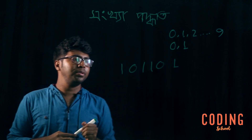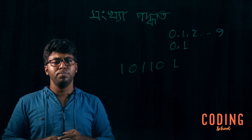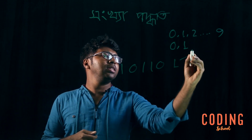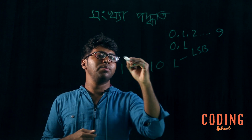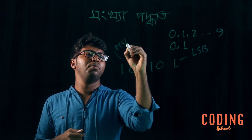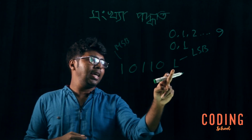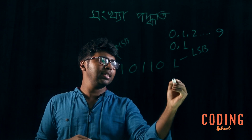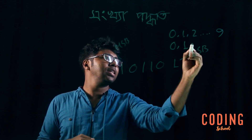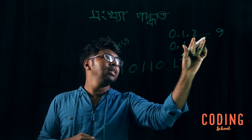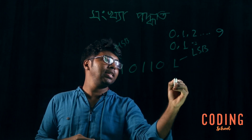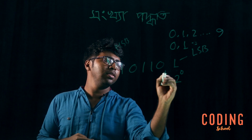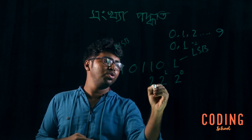We have to understand how we interpret the binary system. We know that the most significant bit and the least significant bit are on this scale, where the scale is base 2. So this scale is 2 to the power 0, this is 2 to the power 1, and this is 2 to the power 2.